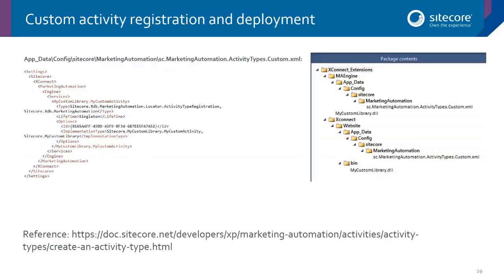Once you've created your activity, you need to register it in an XML configuration file. You need to do so in two places: the actual engine, and the version of the engine running on the marketing automation operations endpoint — but it's the same configuration file.